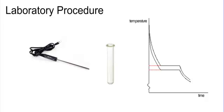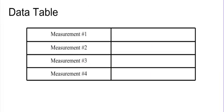Make sure you record that lower freezing point temperature. If you don't get a good reading, melt it back down and try again. Once you're confident in the temperature, melt it back down, take out the temperature probe, clean it off immediately, and put that used test tube up at my desk. You are then done with the laboratory procedure. Make sure you fill out your data table with your four measurements.